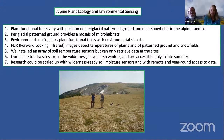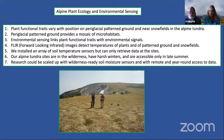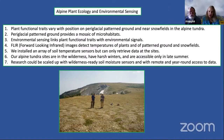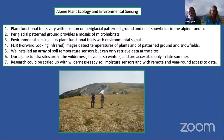A link between alpine plant ecology and environmental sensing: plant functional traits vary with position on paraglacial patterned ground and near snowfields in the alpine tundra. Paraglacial patterned ground provides a mosaic of microhabitats. This picture shows James and Kevin and two of Kevin's dogs standing on polygons of the patterned ground, and it occurs in stripes as well as polygons up here at Goat Flat. Environmental sensing links plant functional traits with environmental signals, and FLIR — forward-looking infrared images — detect temperatures of plants, patterned ground, and snowfields. We installed an array of soil temperature sensors, but can only retrieve data on-site. Our alpine tundra sites are in the wilderness, have harsh winters, and are accessible only in late summer.